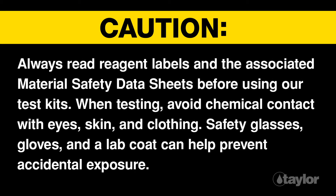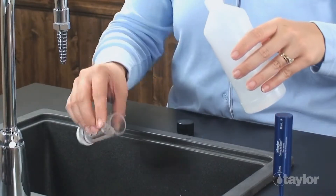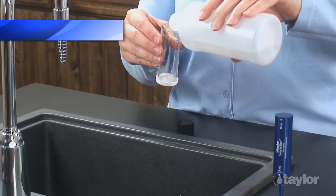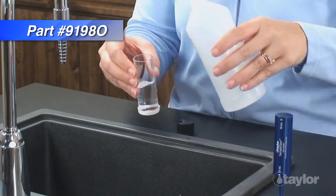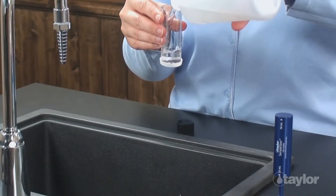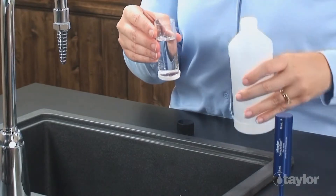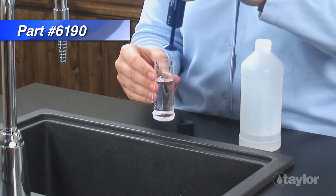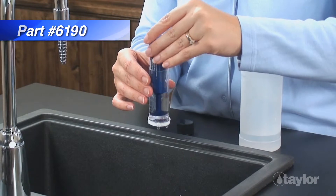Using a drop equivalency of 10 ppm, rinse and fill the 25 ml sample tube to the 25 ml mark with the water to be tested. The Taylor Sample Sizer, shown here, is a great tool for getting accurate measurements every time.